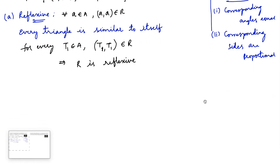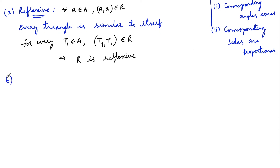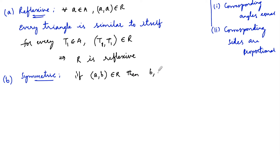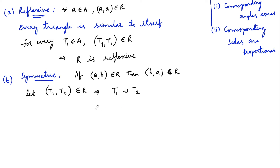Coming to the second property, symmetric. The condition for symmetric is: if (a, b) belongs to R then (b, a) belongs to R, where a and b belong to the set. So if (t1, t2) belongs to R, meaning t1 is similar to t2, we can also say t2 is similar to t1, so (t2, t1) belongs to R. Hence R is symmetric.